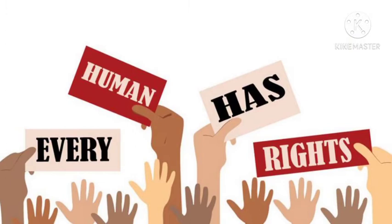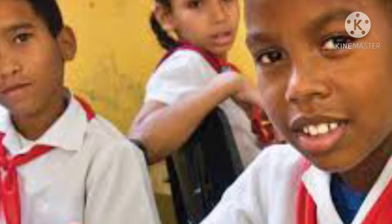Tosan and Odeon are students in class 5. One day Tosan saw Odeon stealing a book from another student's bag. He told Odeon that he would report him to the teacher. Odeon tried to stop Tosan by threatening to beat him up. What should Tosan do? Does he have the right to tell the truth about what he saw Odeon doing?